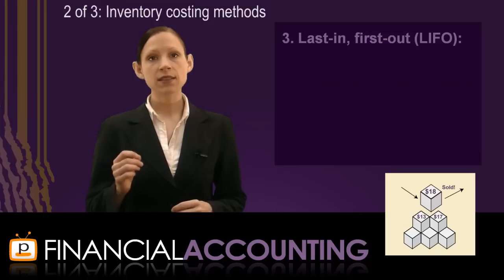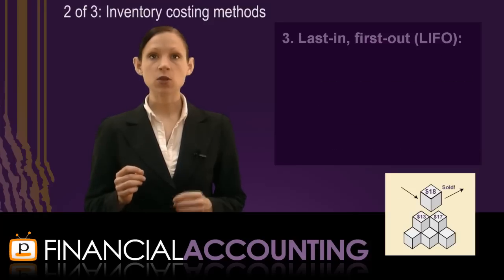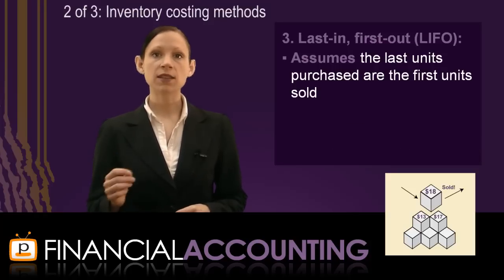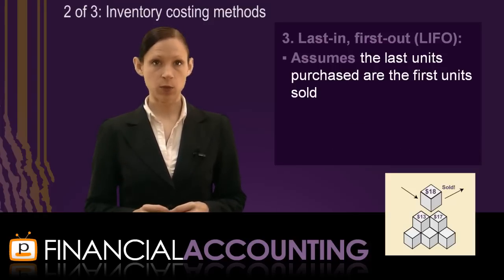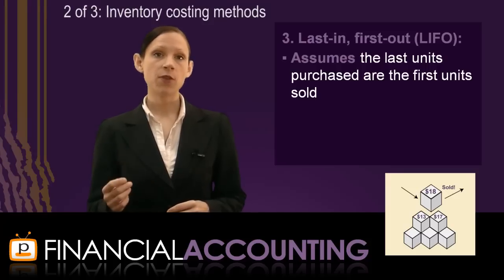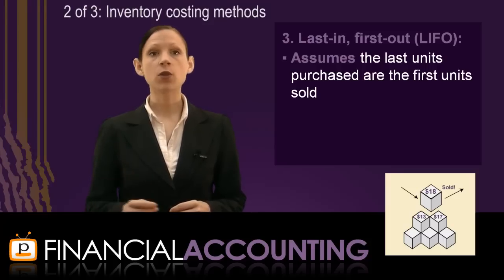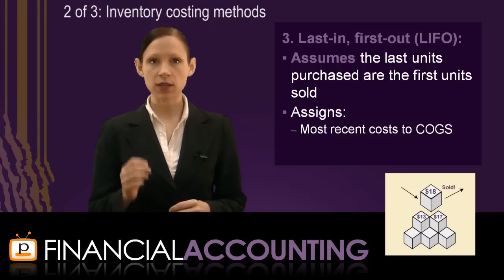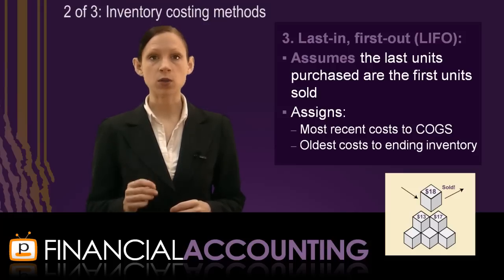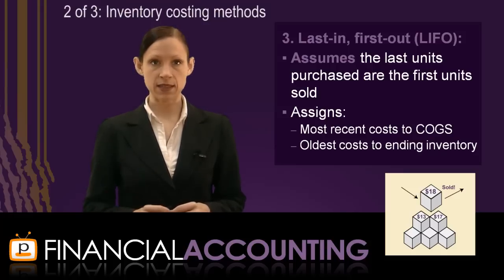The Last In First Out, or LIFO method, assumes that the last units of inventory purchased are the first units to be sold. Therefore, at each sale, the cost of the most recent purchases are assigned to cost of goods sold, leaving the cost of the oldest purchases in ending inventory.